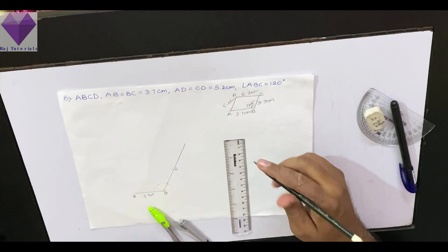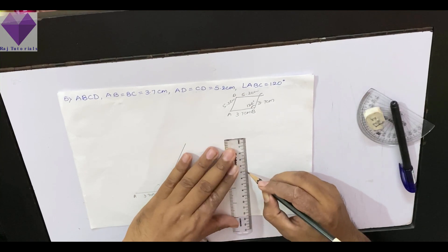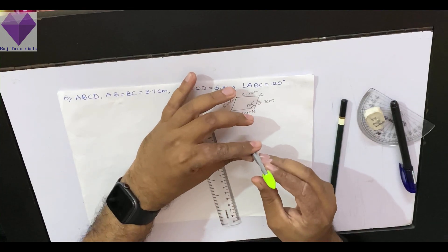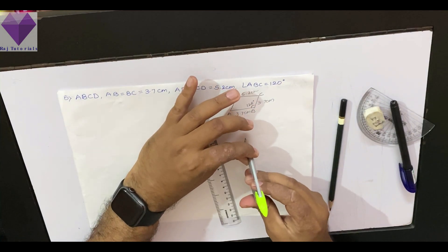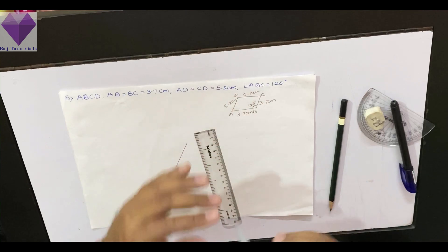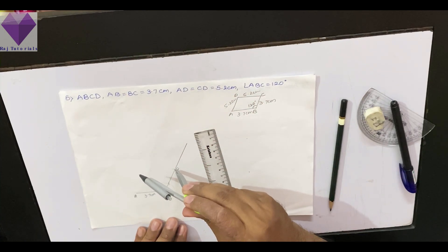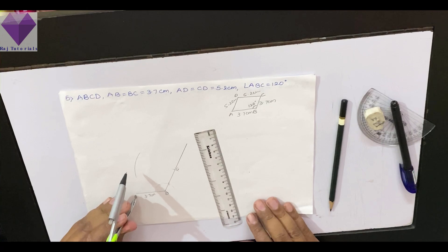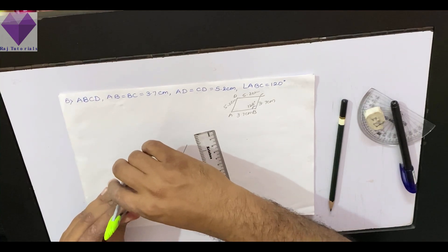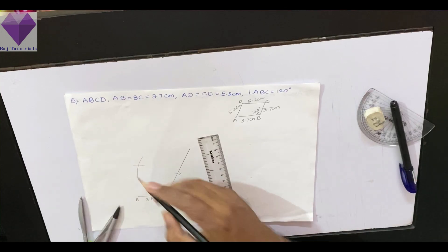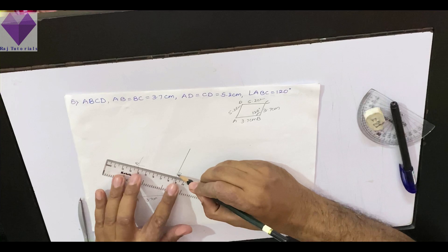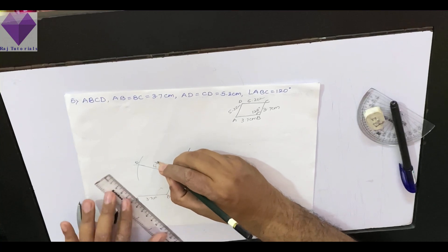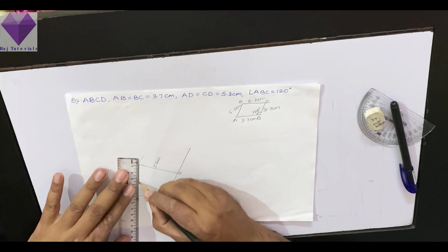Now with C as center, I have to draw a 5.2 cm arc. And with A as center, I have to mark a 5.2 cm arc. Both the arcs are marked. This point I have got as D. Now I will join CD which is 5.2 cm, and AD which is 5.2 cm.